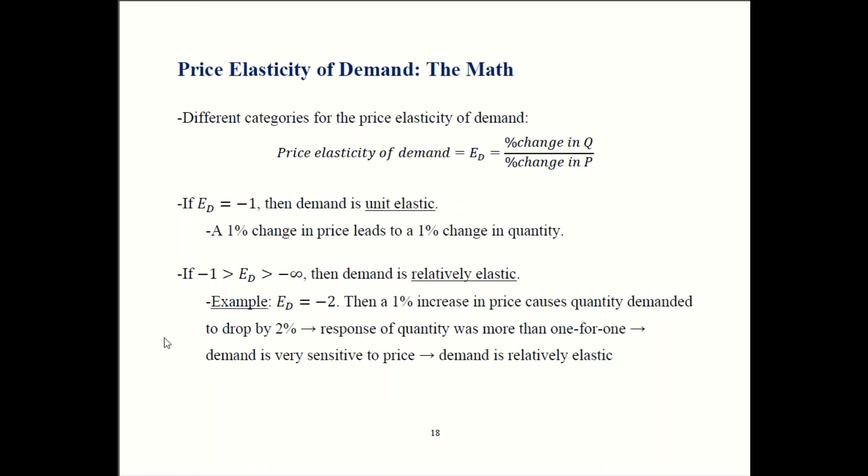Next possibility is relatively elastic demand. That's where demand is less than negative one, but it's still finite. As an example, consider an elasticity of demand that is negative two. So if prices go up by one percent, people respond by buying two percent less. That's a more than one for one response. That means that people are sensitive to price and they care about price quite a bit and they do change their behavior substantially when price changes. So if demand is very responsive to price, we say demand is relatively elastic.